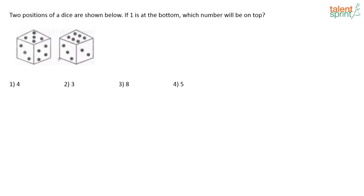Two positions of a dice are shown. If one is at the bottom, which number will be on top? This is a very easy question. You have a dice, and if you look at both the dimensions given, the common side present in both pictures is the face which has three dots.